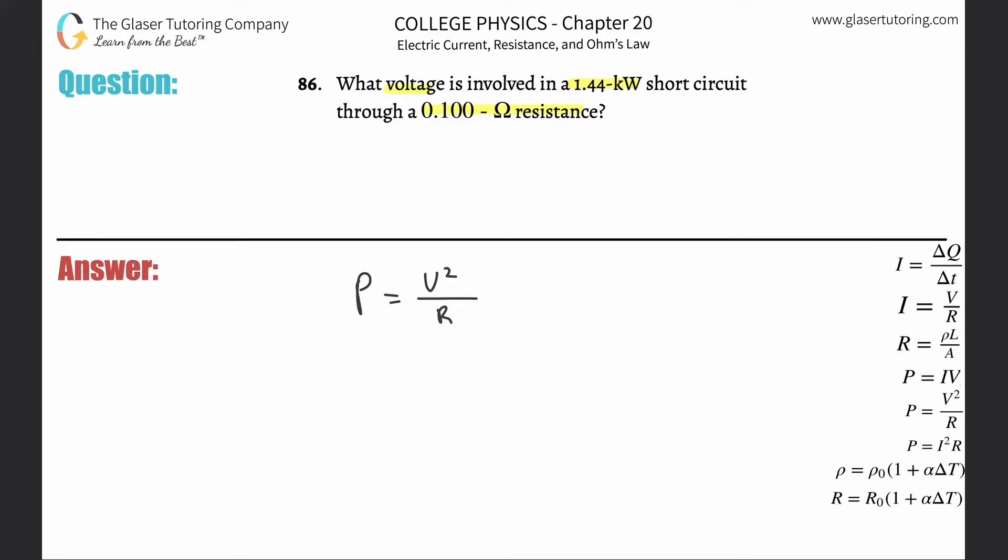To find the voltage, cross multiply the R over. So resistance multiplied by power equals voltage squared: R·P = V². But we don't want squared voltage, so square root both sides. Now voltage equals the square root of resistance multiplied by power: V = √(R·P).